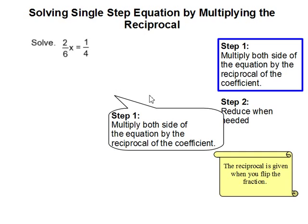Now to solve for x, we have to multiply both sides of the equation by the reciprocal of the coefficient. So our coefficient is 2 over 6 and the reciprocal is simply that fraction flip. So that is 6 over 2. And we multiply 6 over 2 on both sides of our equation to balance it out.